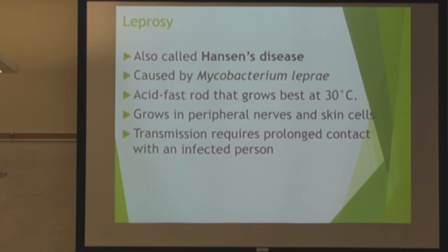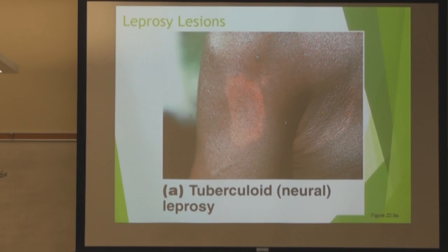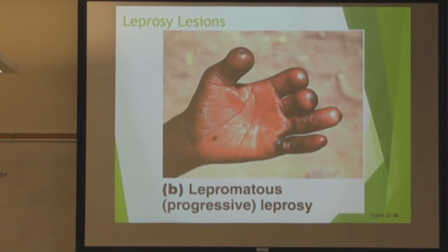Leprosy — the causative agent of Hansen's disease. Acid-fast rod found in peripheral nerves. There are two types: tuberculoid leprosy and the progressive lepromatous form, which shows nodules on the fingers. You can see the clinical difference clearly — one is much more severe.